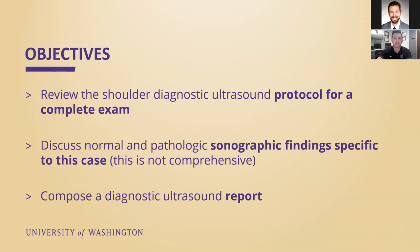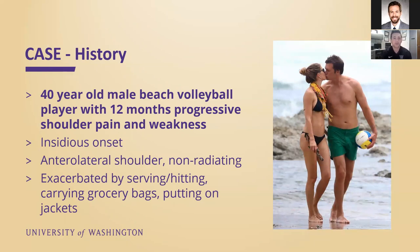The objectives for today's talk: we're going to review the complete protocol for a diagnostic shoulder, discuss the normal and pathologic findings specific to this case — note that it's not a comprehensive case, there's a lot more pathology we will not be touching on — and then compose a diagnostic report. This case is about a 40-year-old male beach volleyball player with 12 months of progressive shoulder pain and weakness. Insidious onset; although he plays volleyball regularly, he couldn't remember any trauma. The pain was described as anterolateral, non-radiating, and mostly exacerbated by serving and hitting, but also in daily life — carrying grocery bags, putting on jackets.